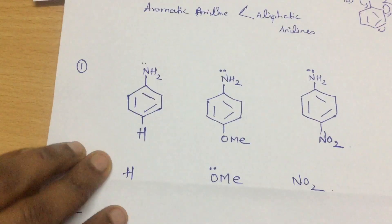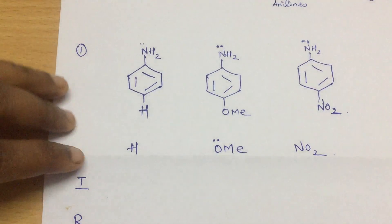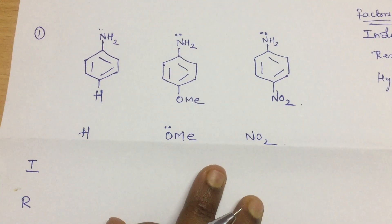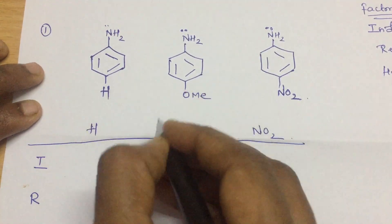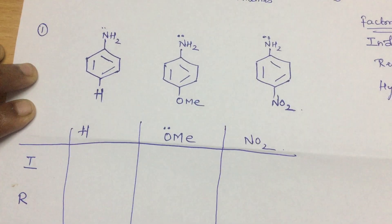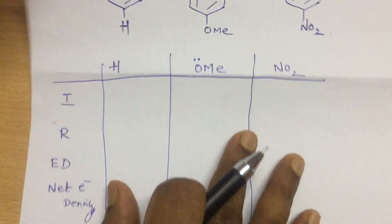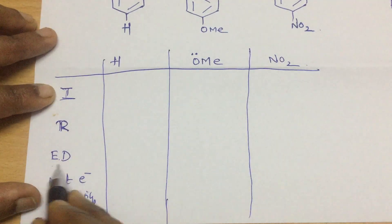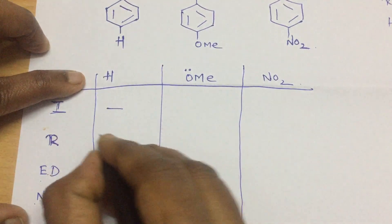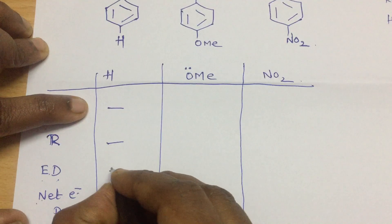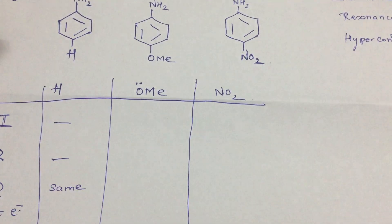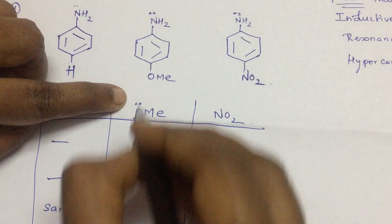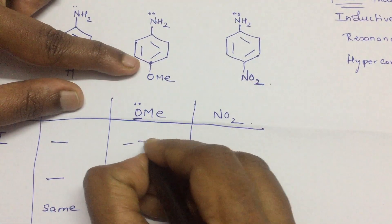Now let's solve the problem. These kinds of questions appear in board exams and competitive exams. We have to compare the basicity of para-methoxy aniline, aniline, and para-nitroaniline. I have written out the substituents and we will compare the electronic effects systematically. For hydrogen, it is neutral to inductive effect and neutral to resonance effect, so in aniline the electron density remains unaffected.